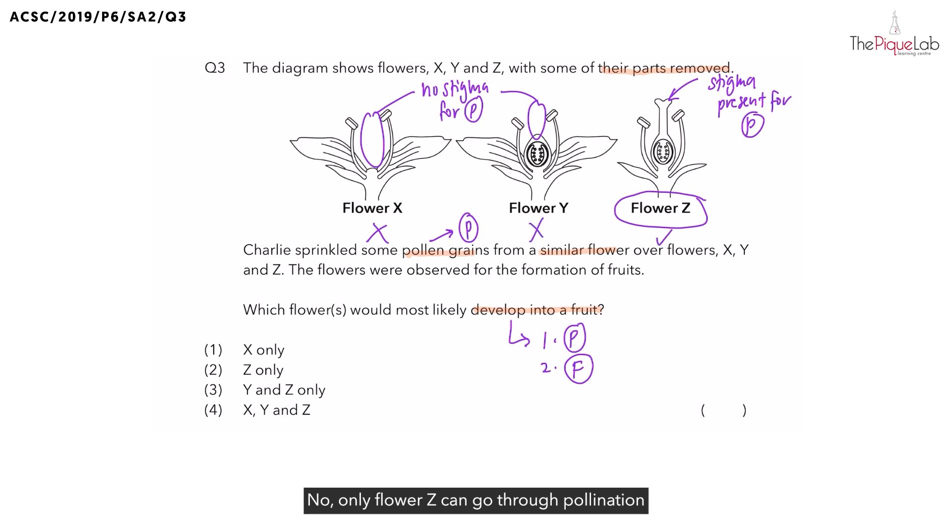Only flower Z can go through pollination and fertilisation for it to become a fruit. Giving us the answer as option 2.